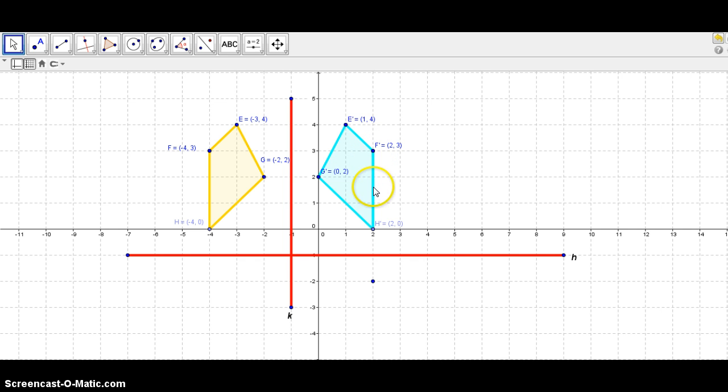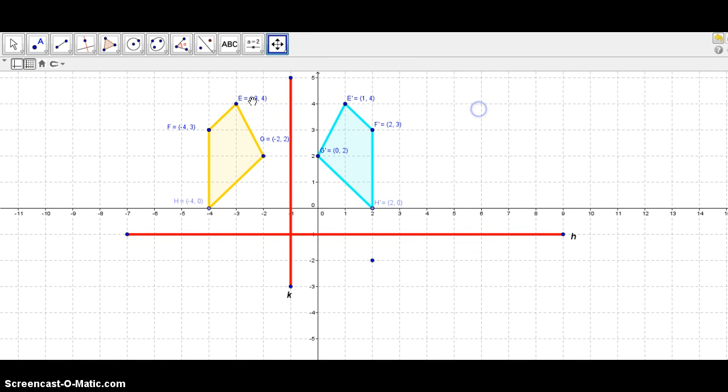F prime is one, two, three, four units above. So, therefore, the reflection would be four units below. So, one, two, three, four. Might run out of space here. So, I need to move this a little bit up. Alright, so let's try again. One, two, three, four. Okay, this will be your F double prime.